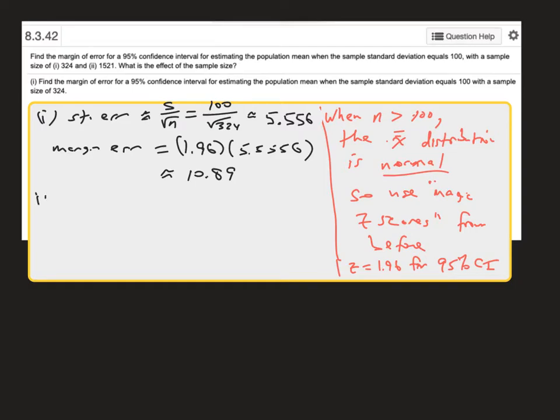In part two, I'm going to do the same two steps. The standard deviation is still 100, but now my sample size in the second step is 1521. So again, to three decimal places, I have 2.564.